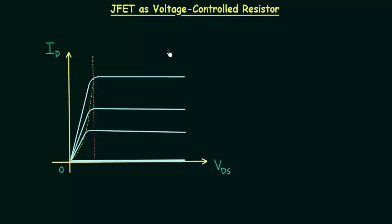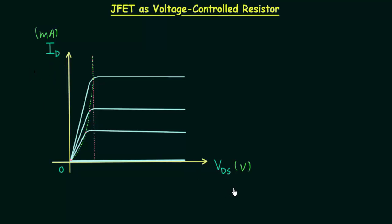On your screen you can see the output characteristics. The x-axis is for voltage VDS, drain to source voltage in volts, and the y-axis is for current ID in milliamps. We call these output characteristics because we have various ID versus VDS curves, where ID is the output current and VDS is the output voltage.